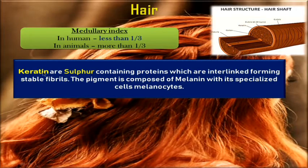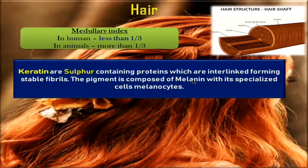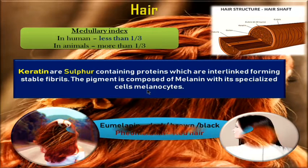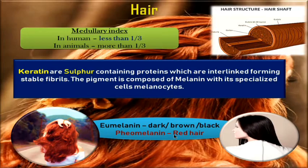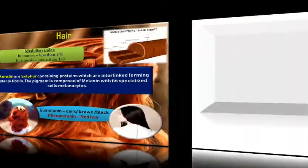Hair contains a protein called keratin, which contains sulfur. This sulfur is interlinked to form stable fibrils. In hair we have a pigment named melanin, which imparts color to the hair via cells called melanocytes. There are two kinds of melanin: eumelanin gives dark brown to black color, whereas pheomelanin gives yellow to red color. They have asked about pheomelanin in previous questions.